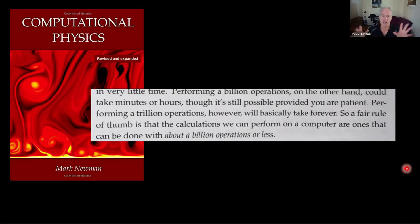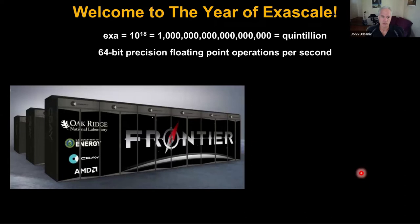So you've got to keep your ambitions pretty low — a billion operations or less. But these days, we are entering the year of exascale computing. Sometime in the next year, the world's first exascale computer will be stood up. This term exascale refers to how many floating point operations the machine can perform — the exaflop. These machines can do 10 to the 18th floating point operations per second, 64-bit double precision. It can do a quintillion floating point operations each second.